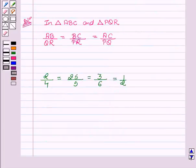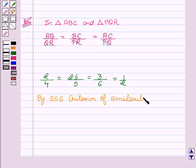Now, since we know from SSS criterion of similarity, if the sides of the triangles are proportional to each other, then their corresponding angles are also equal. Therefore, by SSS criterion of similarity, we find that triangle ABC is similar to triangle PQR.